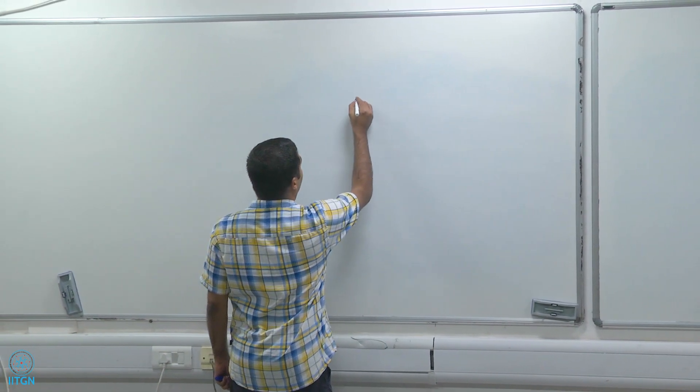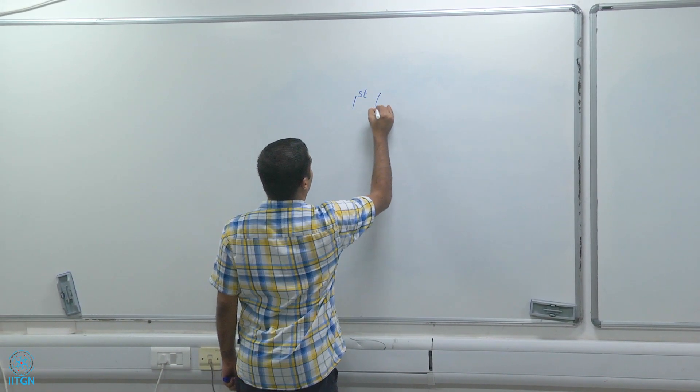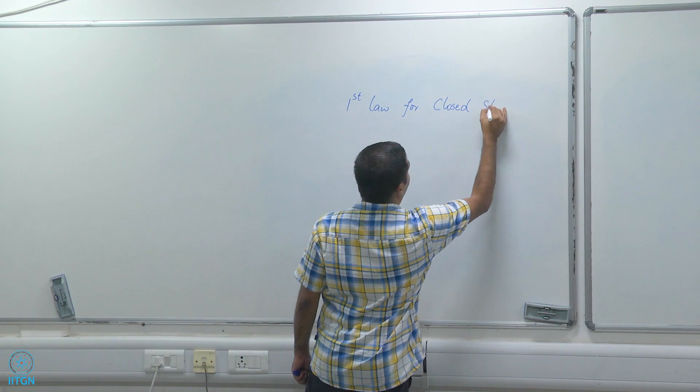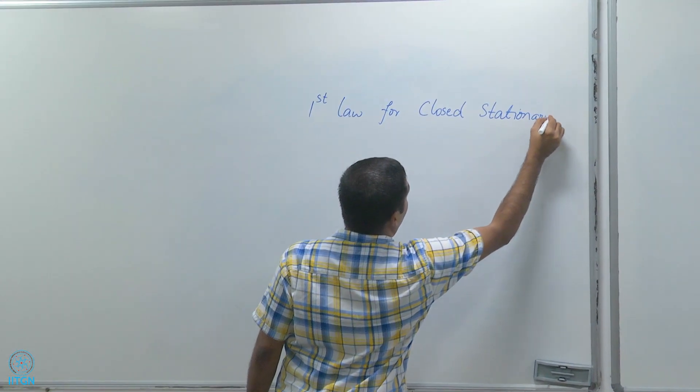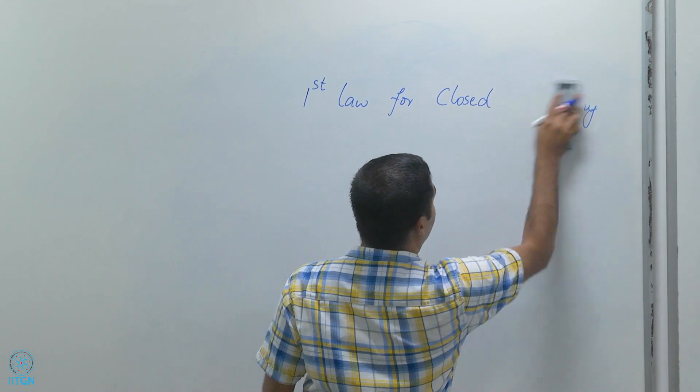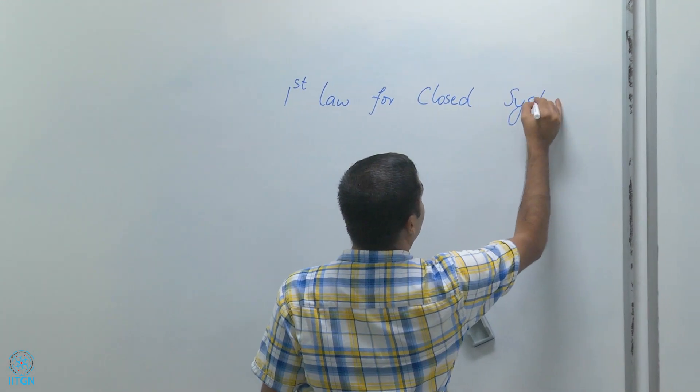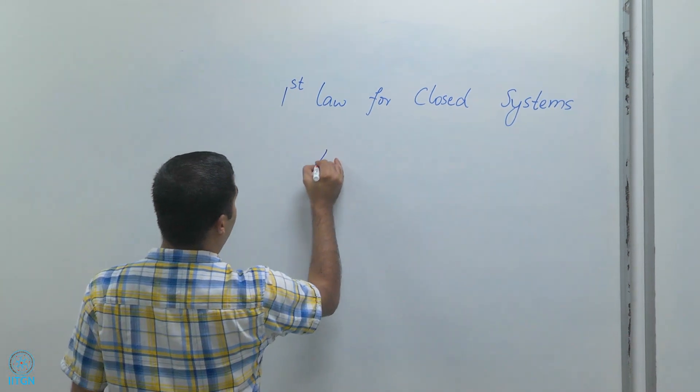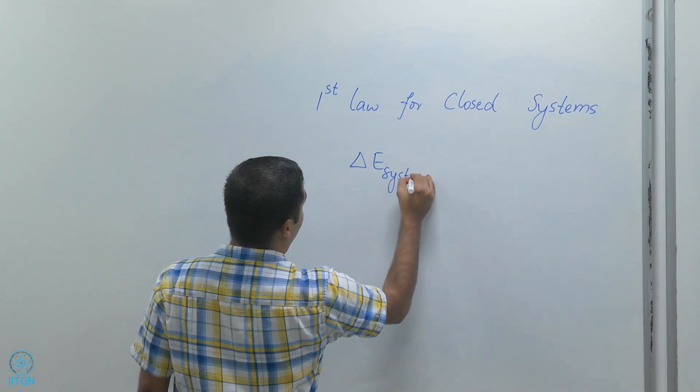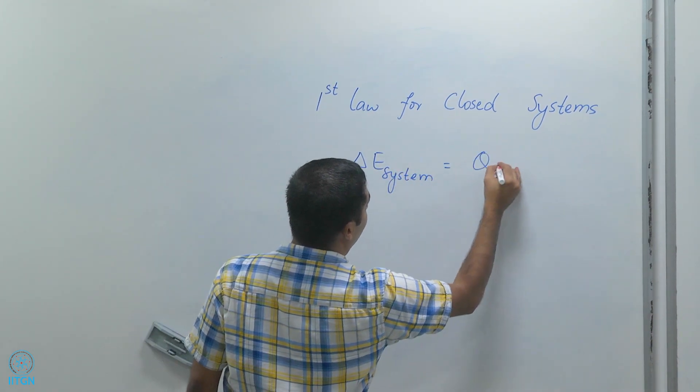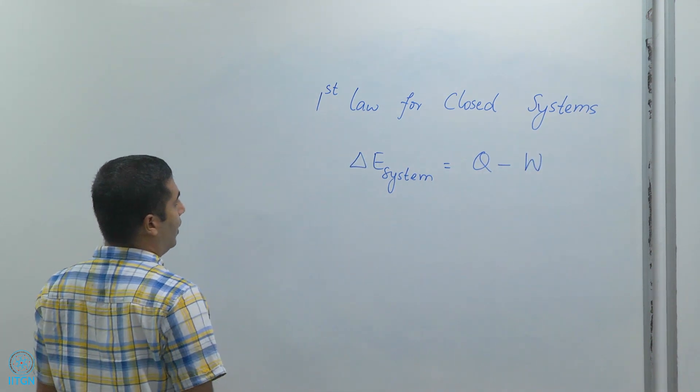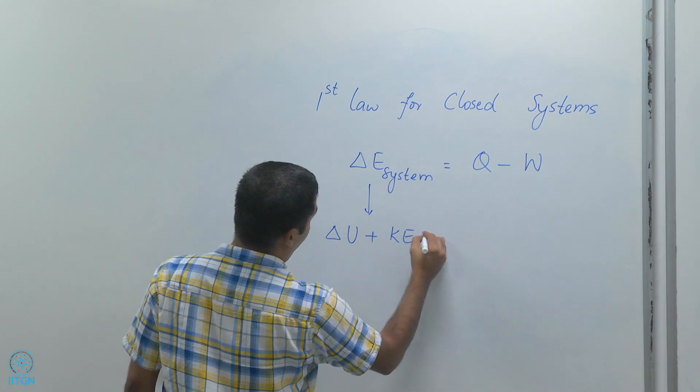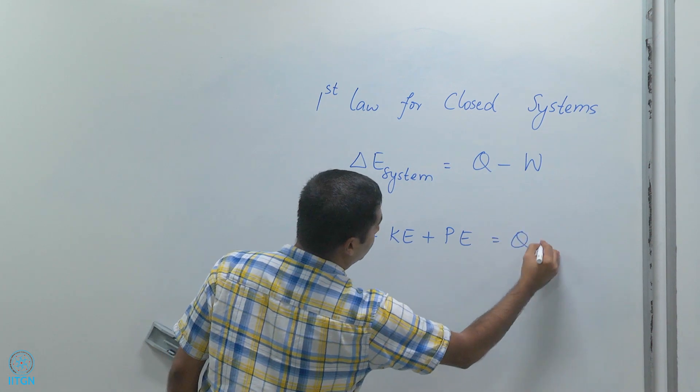Again we look at the first law for closed systems. We wrote that delta E of the system should be equal to Q minus W, and this delta E is nothing but delta U plus KE plus PE equals Q minus W.